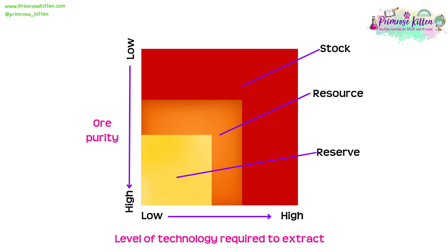For example, we might be able to mine deeper or extract lower grade ores and still make a profit. On the axis of the graph, you can see the level of technology on the X-axis and the ore purity on the Y-axis. Currently, the minerals we are extracting tend to be the highest purity and require the lowest level of technology. If the price increased or the technology advanced, then our reserve square would get bigger and our resource square would get smaller as a result. However, if the market price drops, then reserves could decrease again, as we may only be able to afford to extract the highest grade ores.